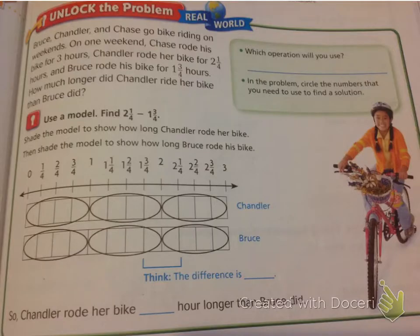Let's take this word problem. Bruce, Chandler, and Chase go bike riding on weekends. On one weekend, Chase rode his bike for three hours. Chandler rode her bike for 2 1/4 hours, and Bruce rode his bike for 1 3/4 hours. How much longer did Chandler ride her bike than Bruce did?